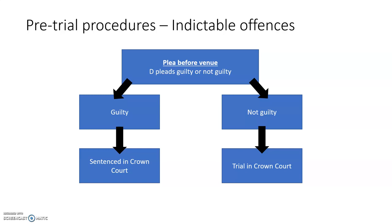For indictable offences, it's very similar to summary, but it all happens in the Crown Court, apart from the very first stage — plea before venue — which always happens in the Magistrates' Court. So they'll be asked to plead guilty or not guilty. If they plead guilty, they'll be sent to the Crown Court for sentencing. If they plead not guilty, they'll be sent to the Crown Court for trial.